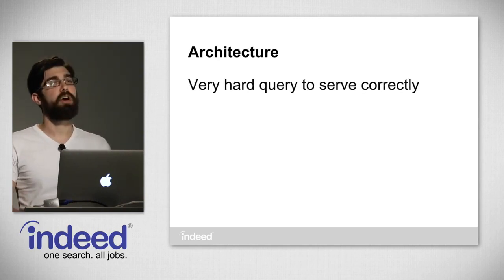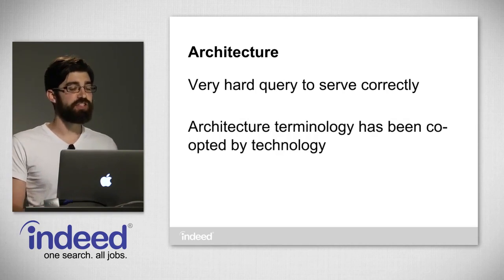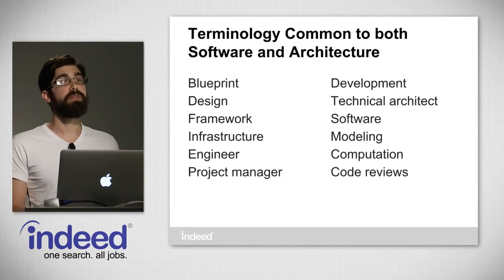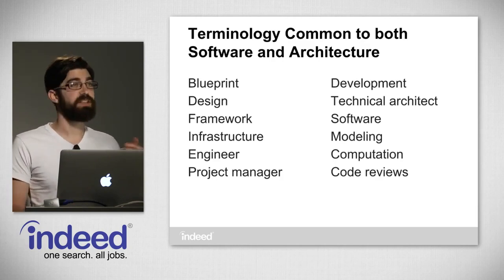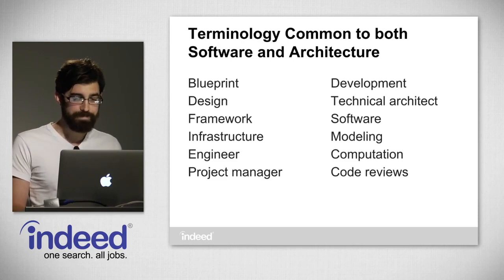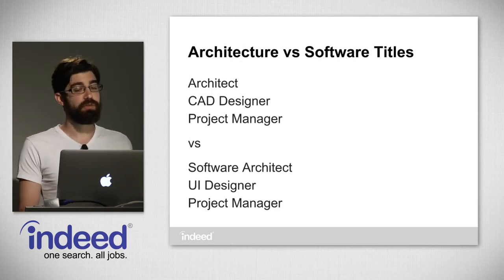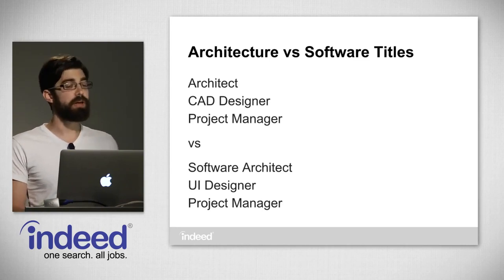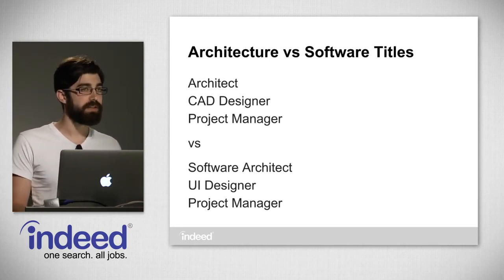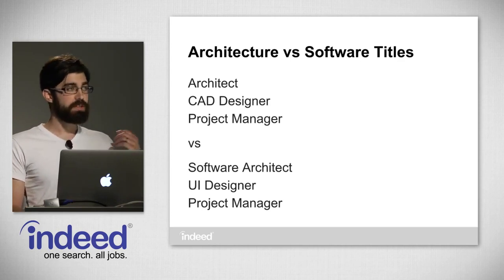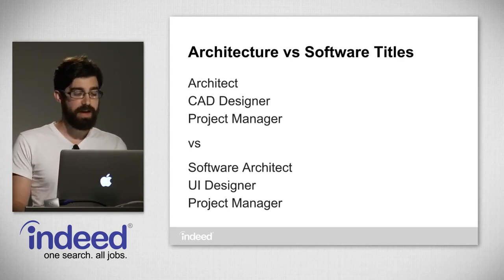One particularly hard query we've had to deal with is architecture. One of the reasons it's very hard is that most architecture terminology has been co-opted by technology. There are a lot of words common to both: blueprint, design, infrastructure, modeling, framework, engineer, project manager, development, technical architect, software, computation. For example, an architect who works on buildings might have a title like architect, CAD designer, or project manager — whereas one who works in software might have software architect, UI designer, or project manager. It's been very hard to figure out how to get the best results with so much crossover.